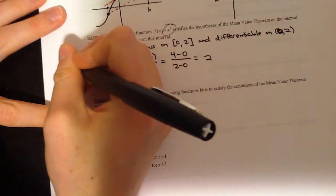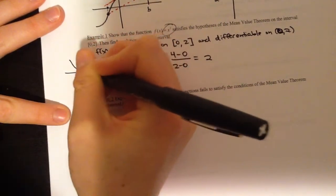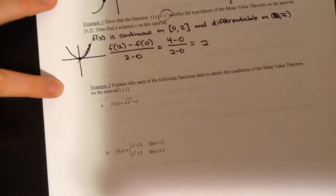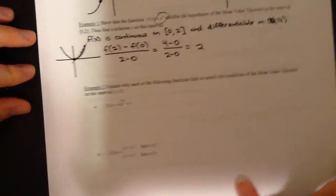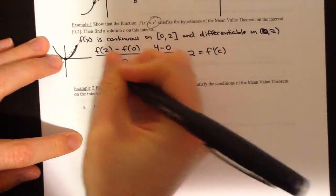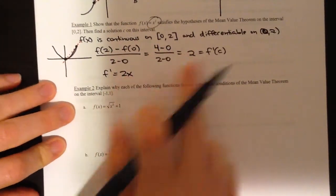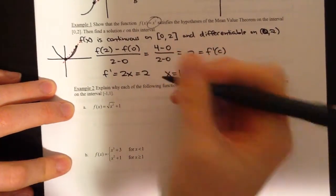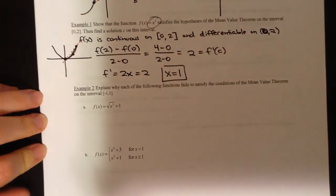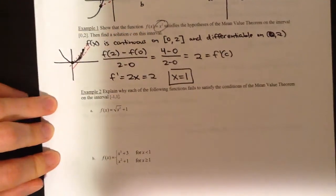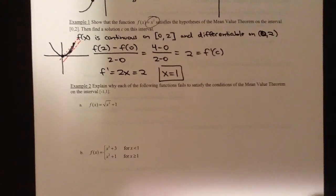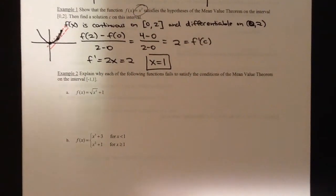Here's our parabola — from (0, 0) up to the point (2, 4). We found the slope of the secant line to be 2. Since the derivative is 2x, we want to know when that equals 2, which happens at x = 1. So at the point x = 1, we have a derivative of 2, meaning the graph has a tangent line parallel to the secant line from 0 to 2. That's our solution: c = 1.